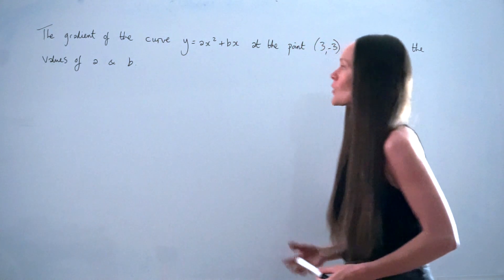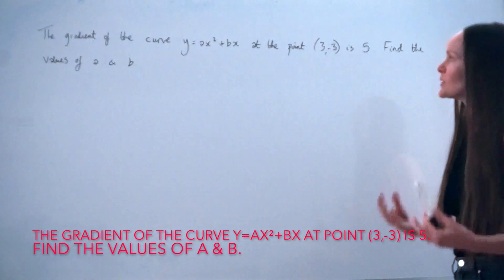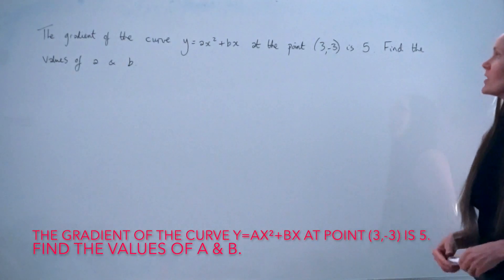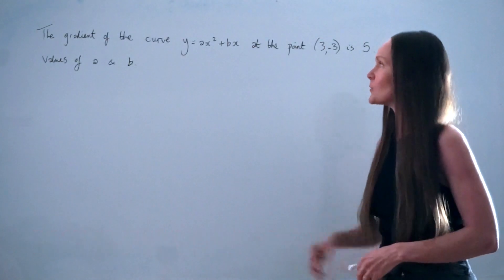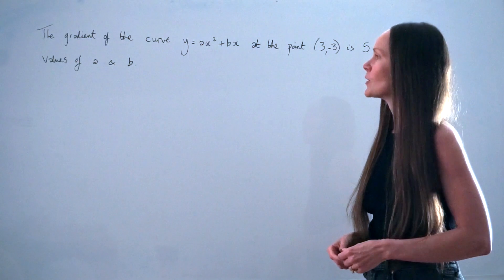In this question, the gradient of the curve y equals ax squared plus bx at the point (3, -3) is 5. Find the values of a and b. So you have to work out these values here in the equation of the curve.